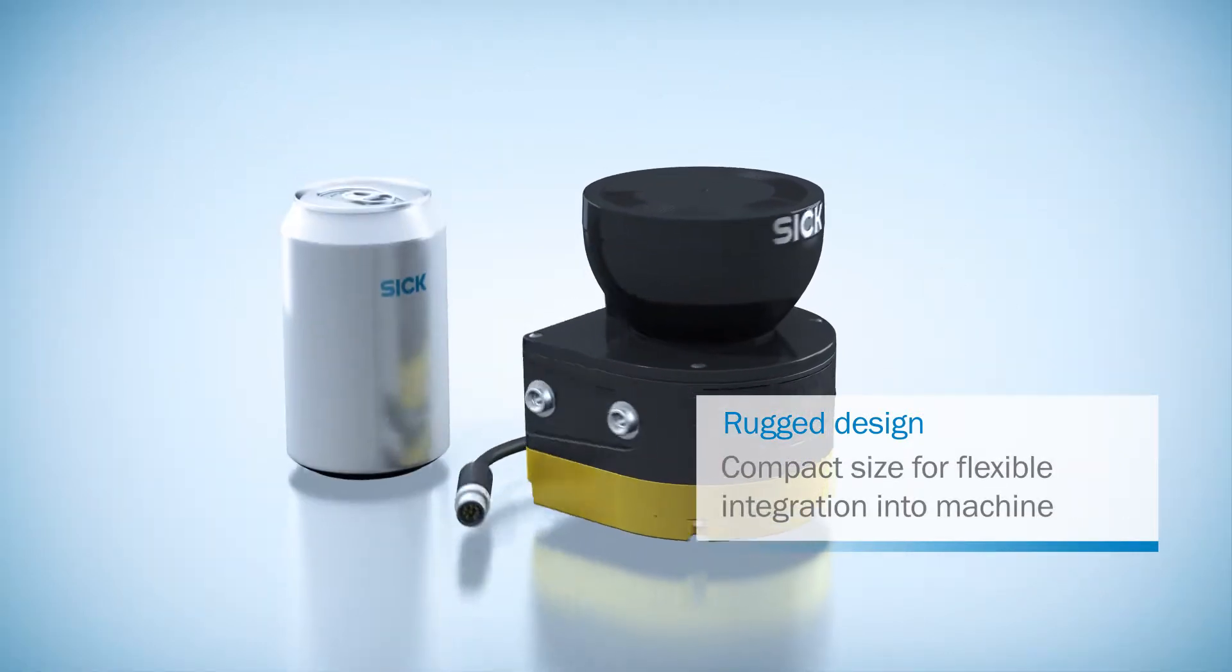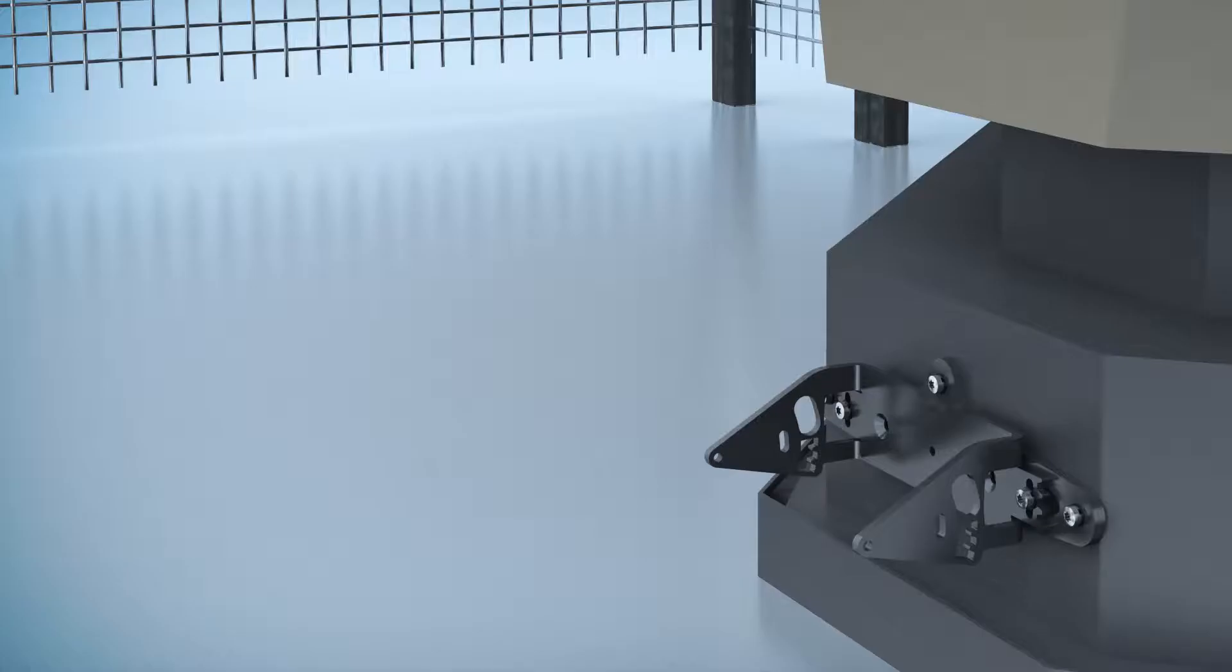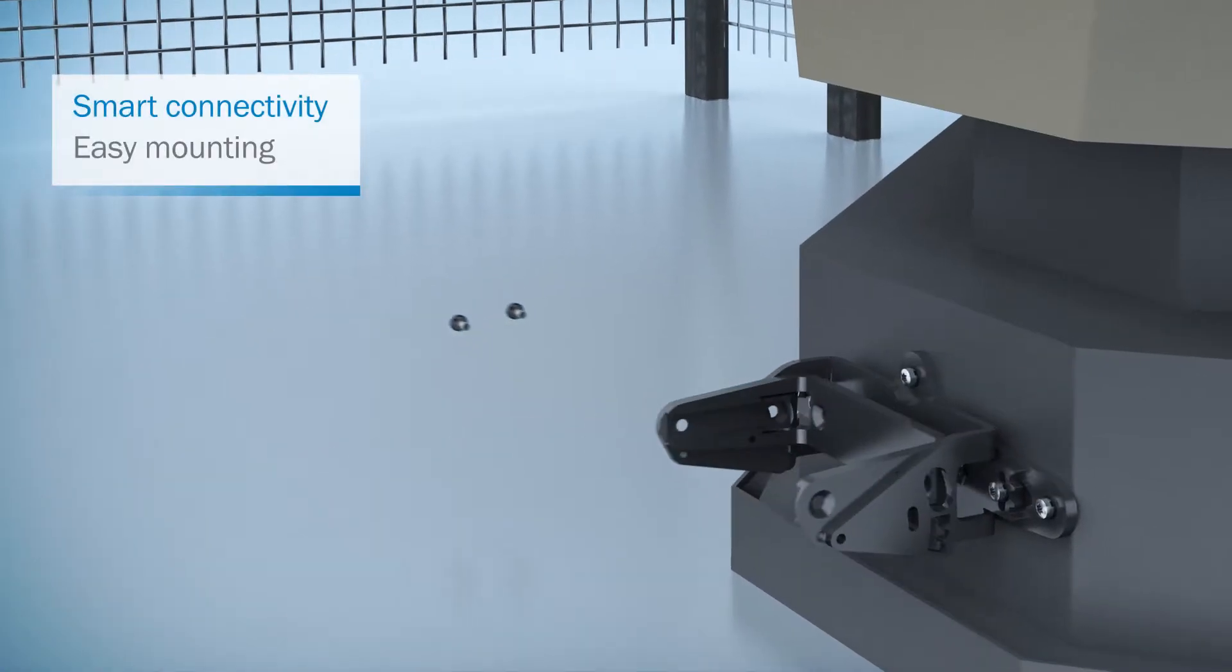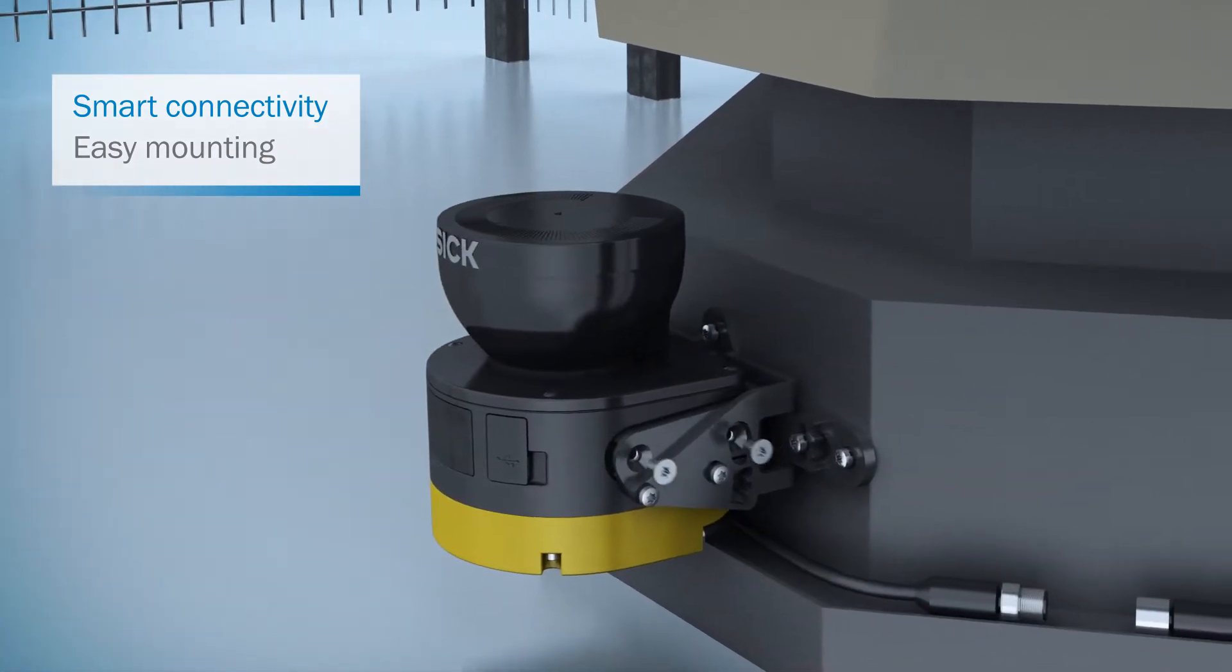And all of this is encased in a reliably rugged and compact metal housing for ultra-easy machine integration. Thanks to the new mounting system, you can have MicroScan3 installed, adjusted, and ready for use in next to no time.